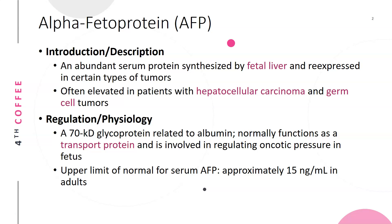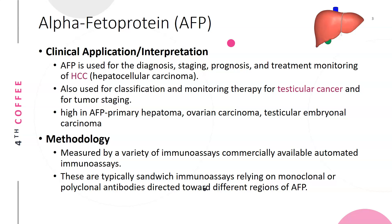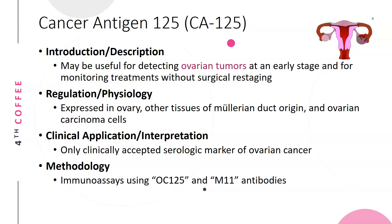The upper limit of normal for serum AFP is approximately 15 nanograms per milliliter in adults. AFP is used for diagnosing, staging, prognosis, and treatment monitoring of hepatocellular carcinoma. It is also used for classification and monitoring of therapy for testicular cancer. High AFP levels are seen in primary hepatoma, ovarian carcinoma, and testicular embryonal carcinoma. The methodology uses immunoassay analyzers with sandwich assays relying on monoclonal or polyclonal antibodies directed toward different regions of the AFP molecule.